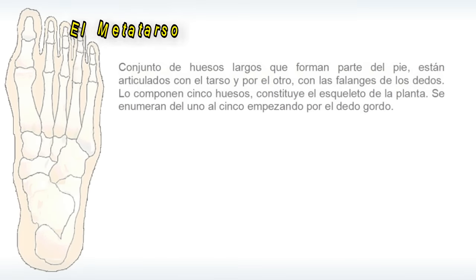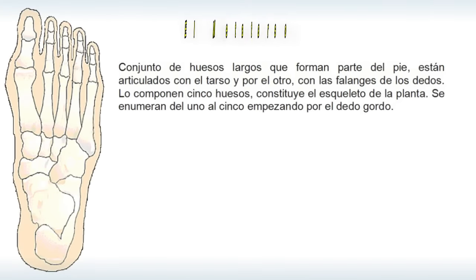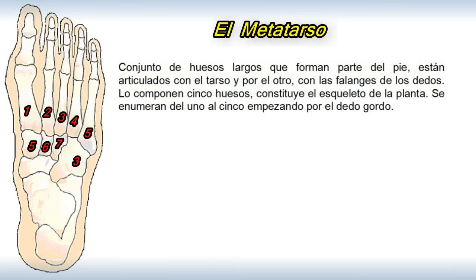El metatarso: conjunto de huesos largos que forman parte del pie, están articulados con el tarso por un lado y con las falanges de los dedos por el otro. Lo componen cinco huesos y constituye el esqueleto de la planta. Se enumeran del uno al cinco empezando por el dedo gordo.